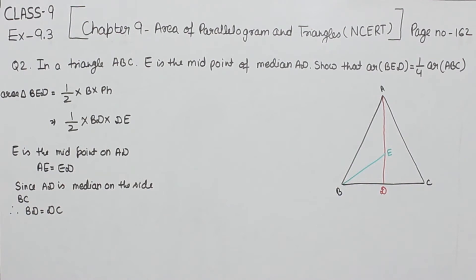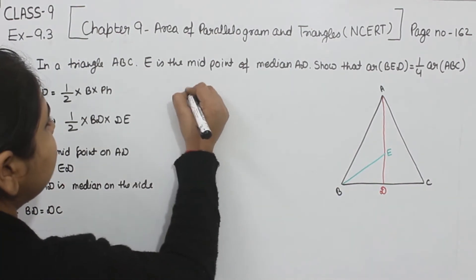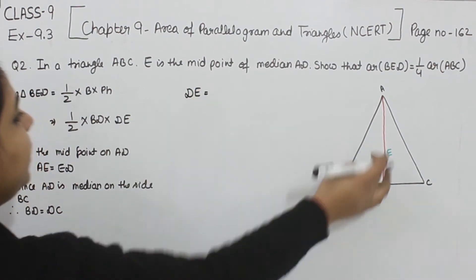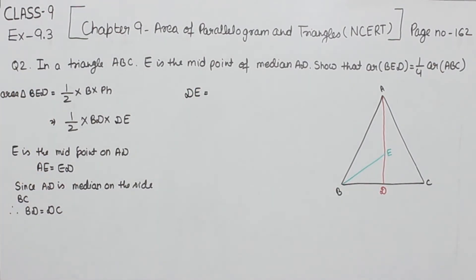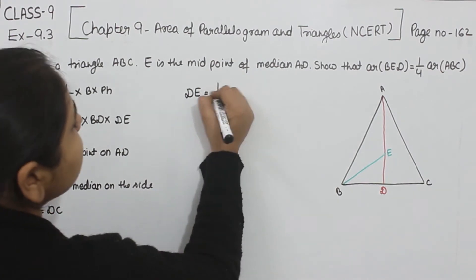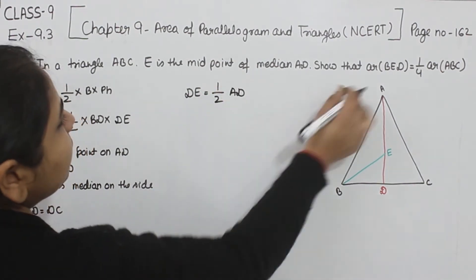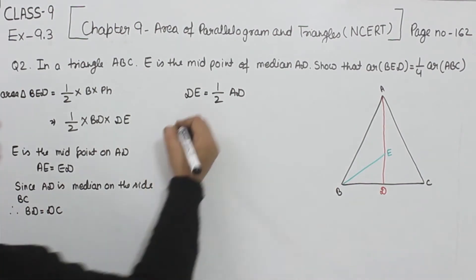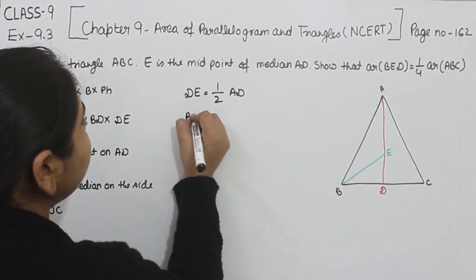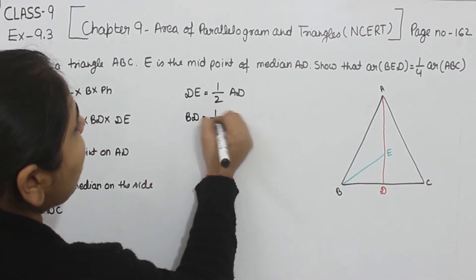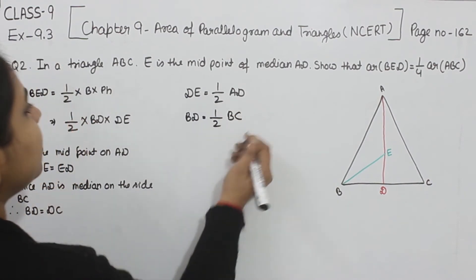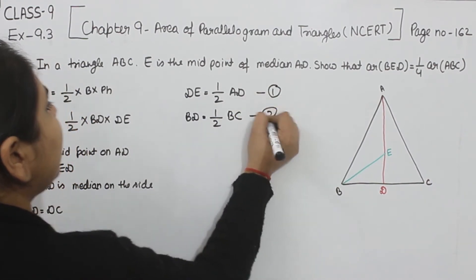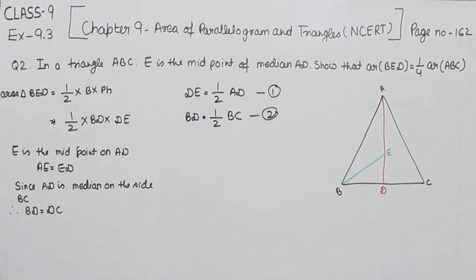From these conditions: DE is equal to half of AD — this is equation number one. And BD is equal to half of BC — this is equation number two.